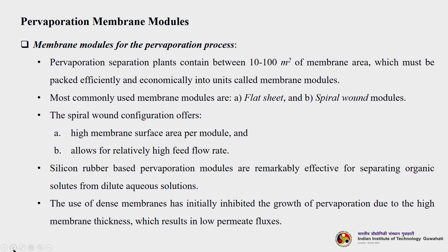Pervaporation separation plants contain between 10 to 100 square meters of membrane area, which must be packed efficiently and economically into units called membrane modules. Most commonly, there are two types: flat sheet membrane modules and spiral wound membrane modules. The spiral is better because it gives high membrane surface area per module and allows for relatively high feed flow rates. Silicone rubber-based pervaporation modules are remarkably effective for separating organic solutes from dilute aqueous solutions. The use of dense membranes initially inhibited the growth of pervaporation due to high membrane thickness, which results in low permeate fluxes.